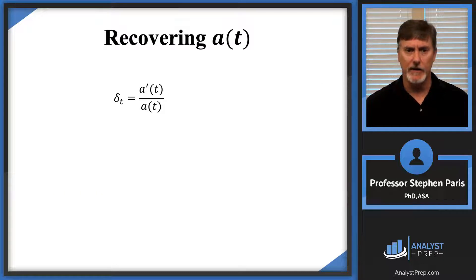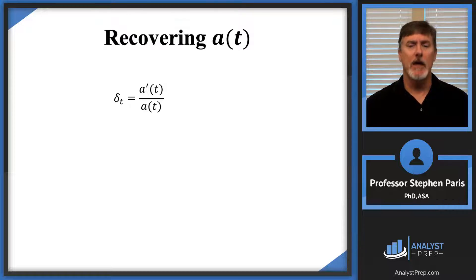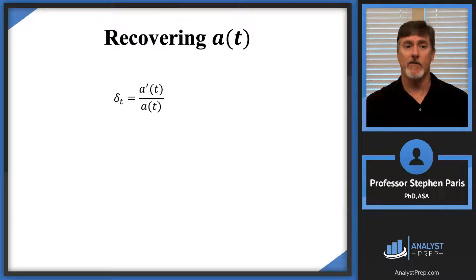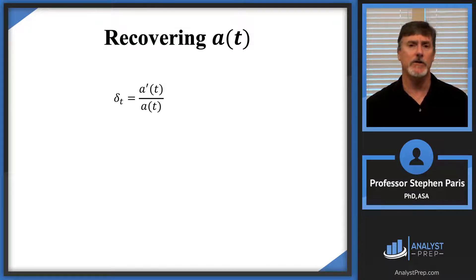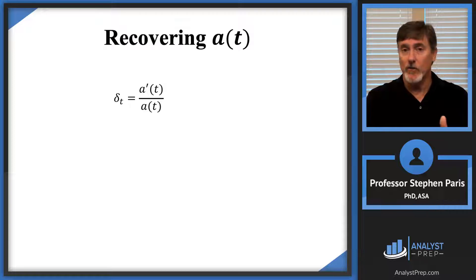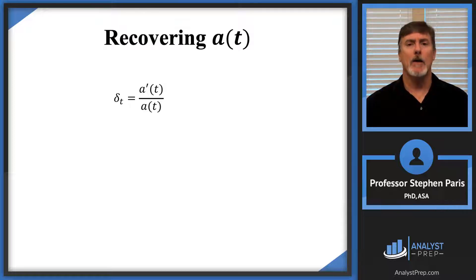Let me explain that a little bit more. This is the definition of the force of interest that we saw in the Part 1 video. If you're given the accumulation function, then it's very easy to get the force of interest. You take the derivative of the accumulation function and divide it by the accumulation function. That ratio gives you the force of interest. As long as you can take that derivative, it's easy.